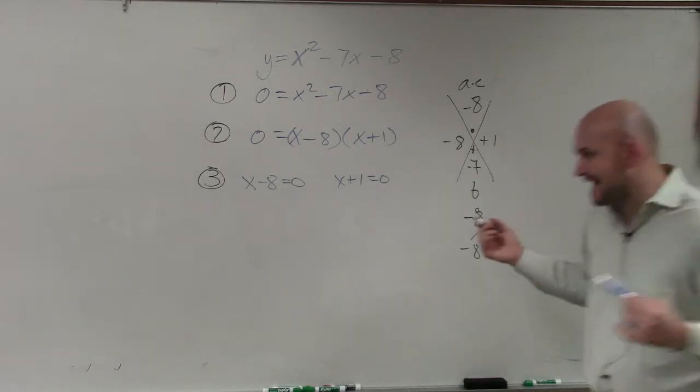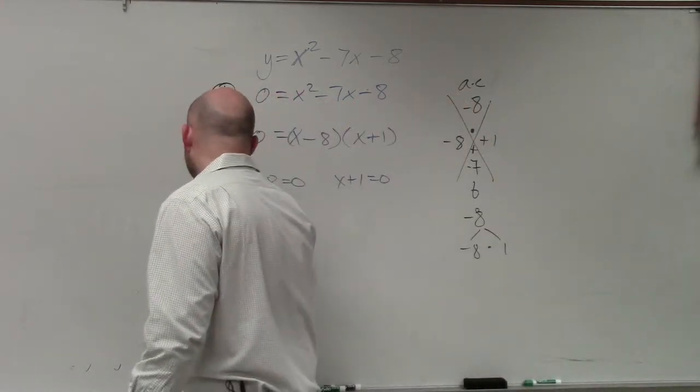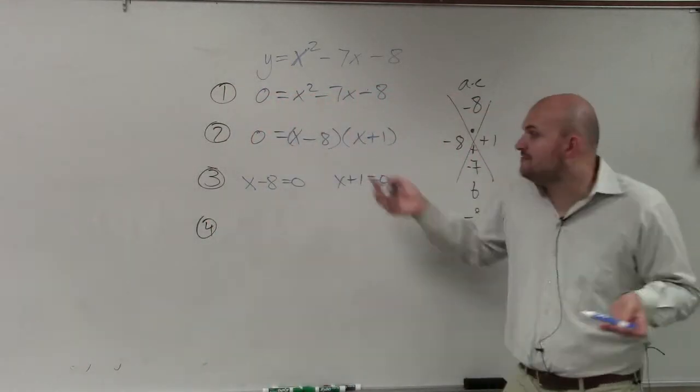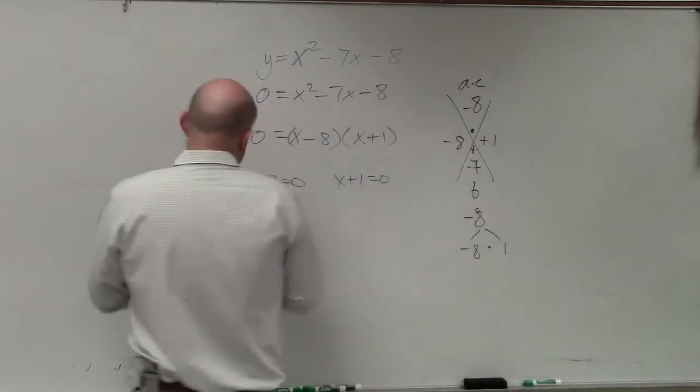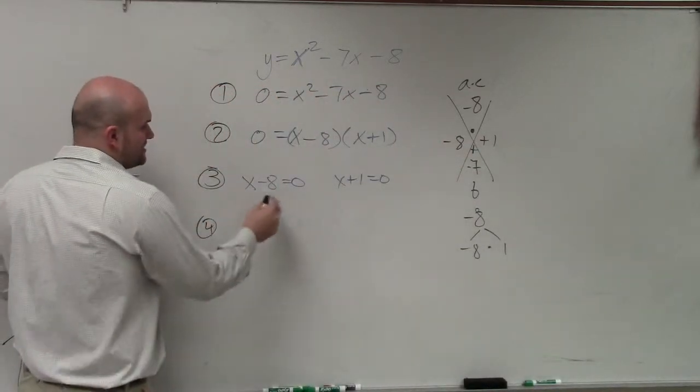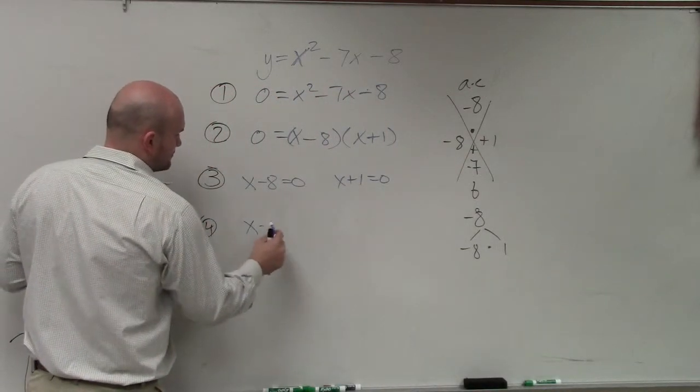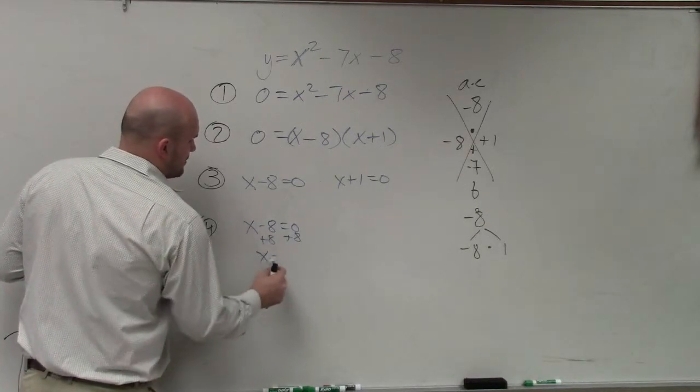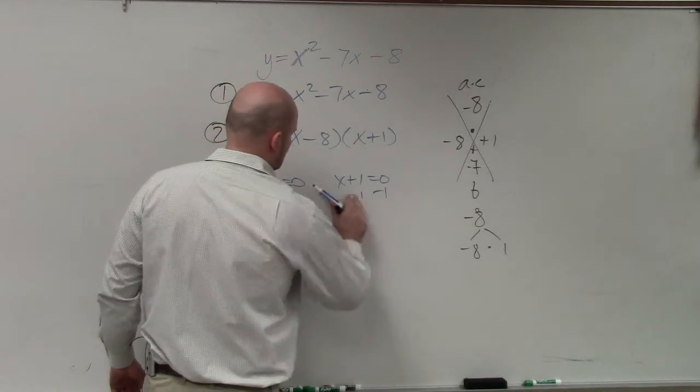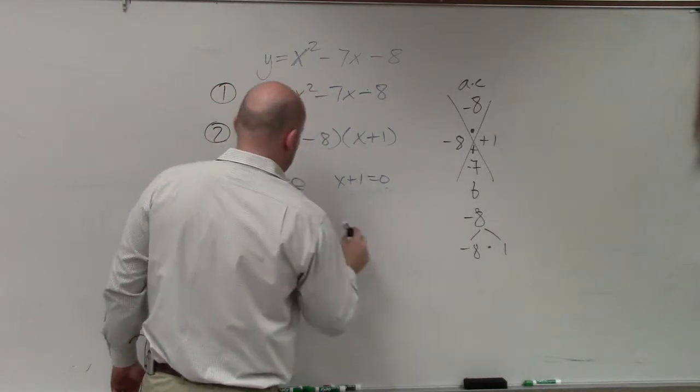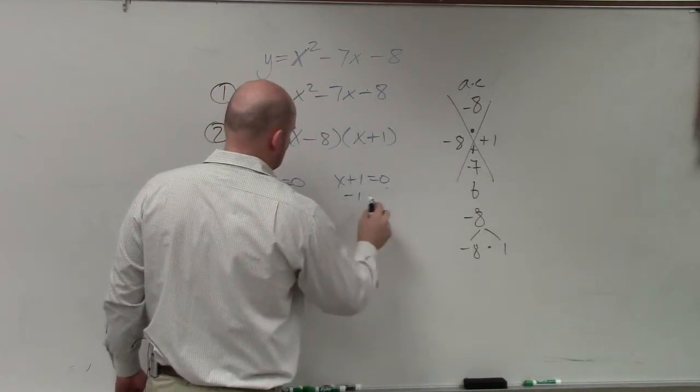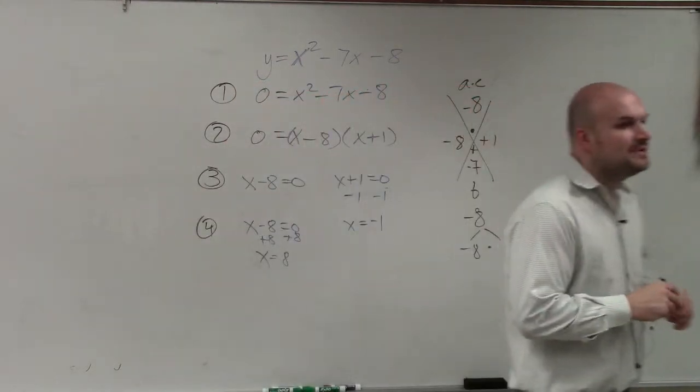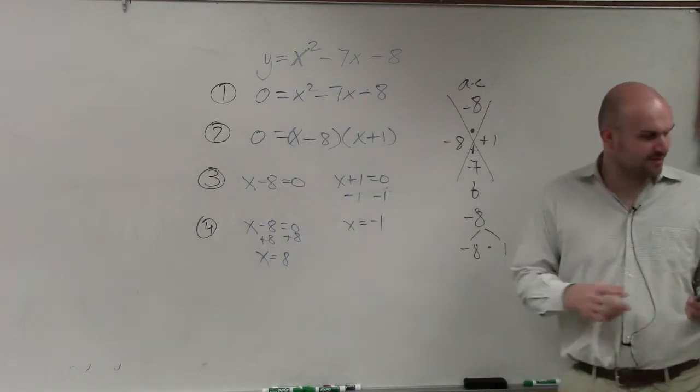Now, the last step, step number four, is to solve, because that's our whole purpose, finding the values of x. What did you take for three? Step three was to set each equal to zero. So x equals 8. So step number four was to set them equal. Does that make sense with everybody?